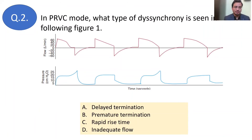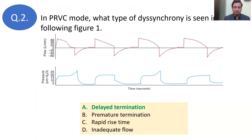Look at the pressure graph closely. You can see a proper pressure waveform — a square wave. But here there is an overshoot. At the end of inspiration, the flow trace shows an increase in inspiratory time. The spread time is slightly increased. This is what is happening here — the problem is delayed cycling. After inspiration, expiration starts, but here inspiration is taking longer, and this is called delayed termination or delayed cycling.